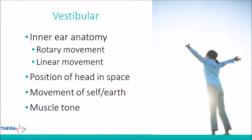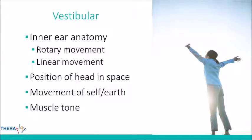Next is the vestibular sense — movement processing. Our sense of movement is actually processed in the ear through one of our cranial nerves. Part of the ear anatomy detects head rotary movement, like spinning, and another part detects linear movement — back and forth. So those are two different types of movement detection built into the system.